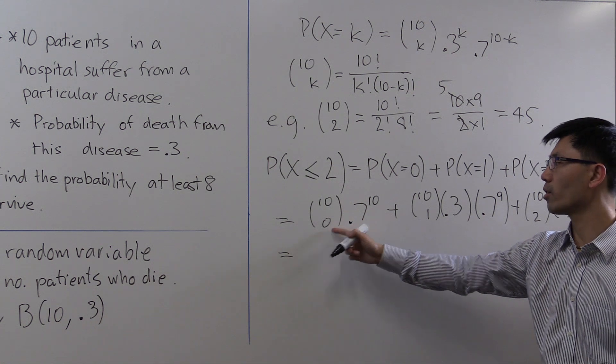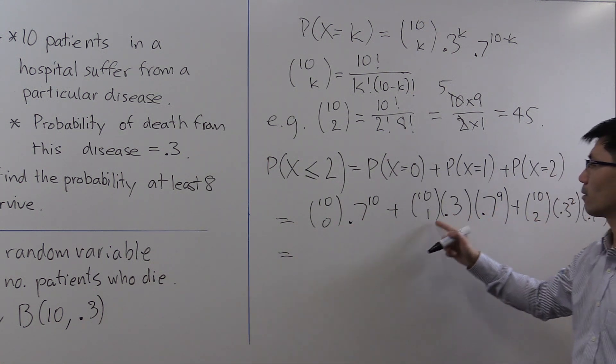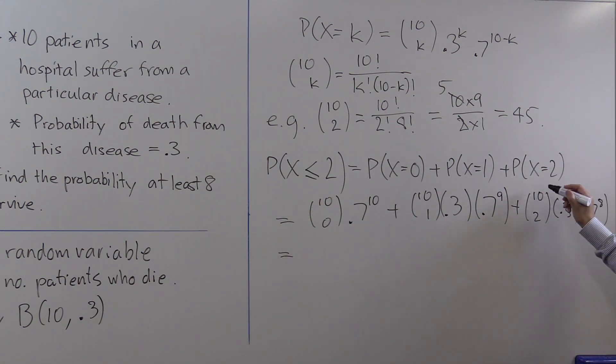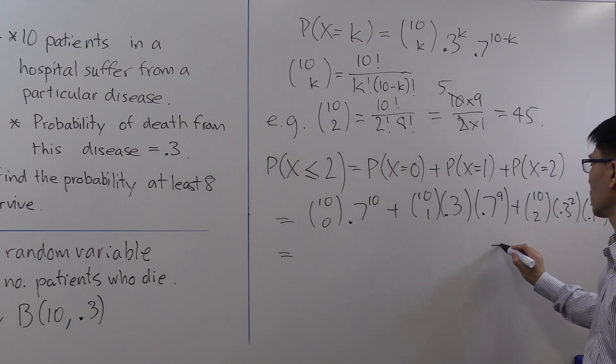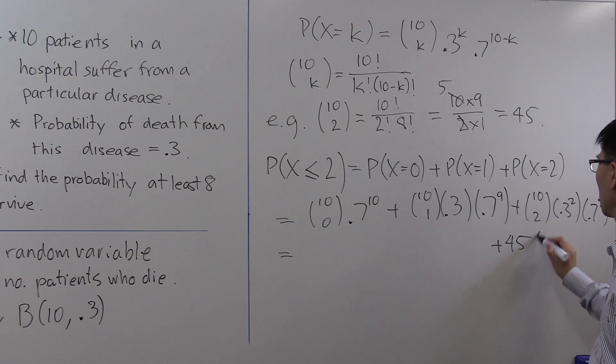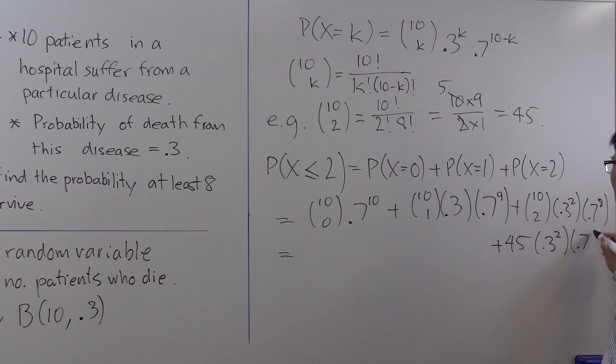So the first thing we'll do is work out all the binomial coefficients. We've worked out 10 choose 2 already, it's 45.